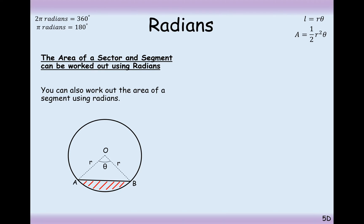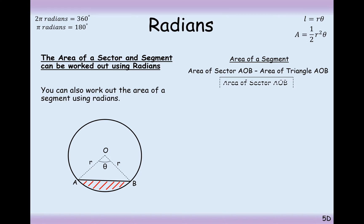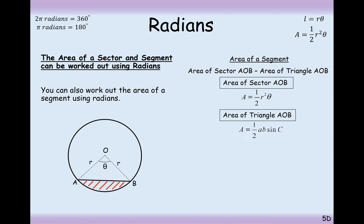You can also work out the area of segments using radians. The area of a segment equals the area of the whole sector minus just the triangle. We have a formula to work out the area of a sector — it's half r squared theta — and for the triangle it's half a b sine c. But a and b are both the radius, so we can write this as a equals half r squared sine theta.